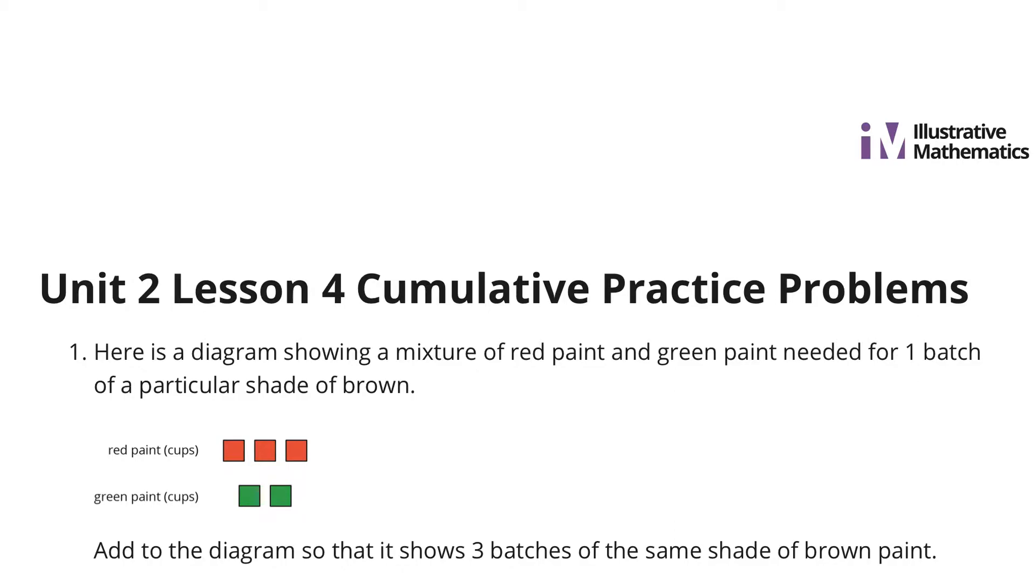In question one, here is a diagram showing a mixture of red paint and green paint needed for one batch of a particular shade of brown. Add to the diagram so that it shows three batches of the same shade of brown paint.